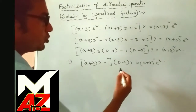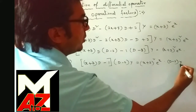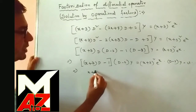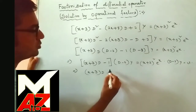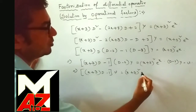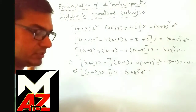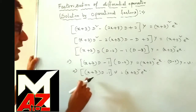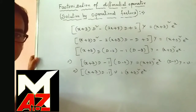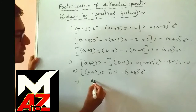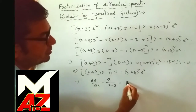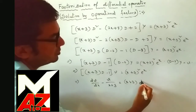We put (D−2)·y = v. Then from the factored equation we get (x+3)·[(x+3)D − 1]·v = (x+3)²·eˣ. This is clearly a first order linear differential equation, which can be written as dv/dx − v/(x+3) = (x+3)·eˣ.